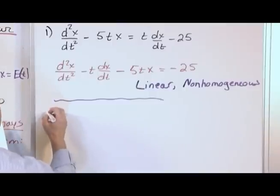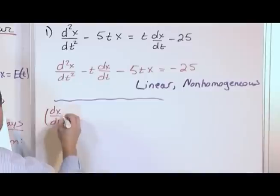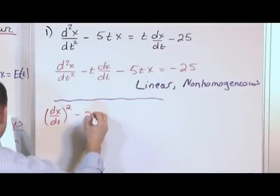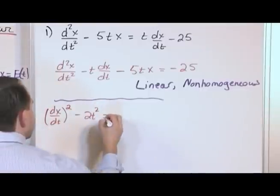Okay, the next thing is, what if I have dx dt, I'm going to wrap it in parentheses, let's square it, minus 2 times t squared. And that's equal to zero.